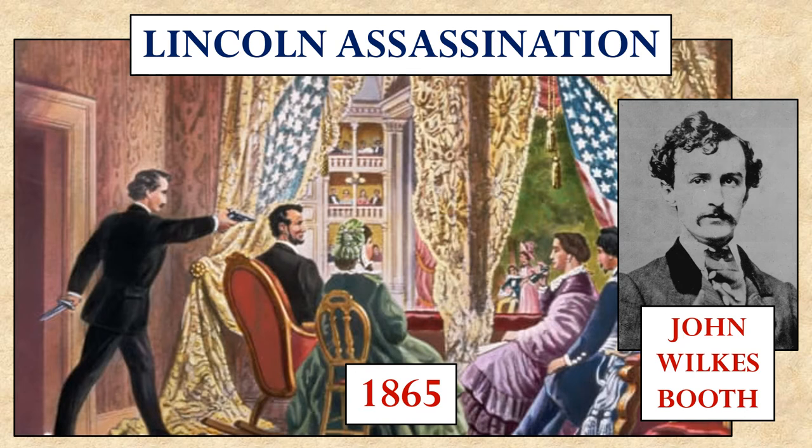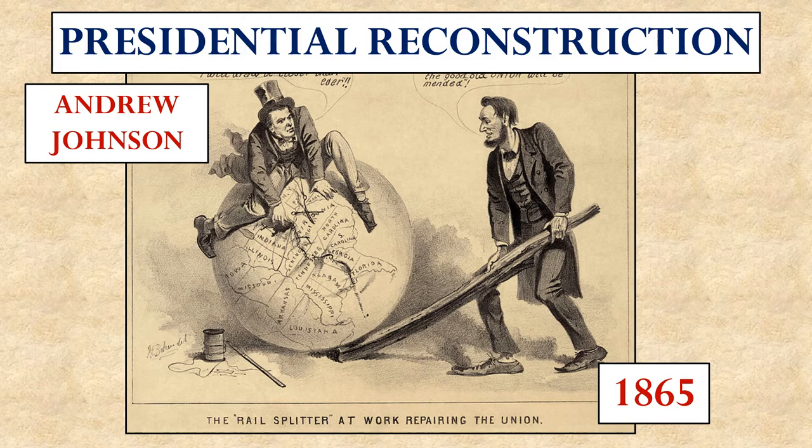The opportunity for them to use that power came because of Lincoln's assassination. A Southerner named John Wilkes Booth, who was very upset by the South losing the war, snuck into a theater and shot Abraham Lincoln in the back of the head. He died not long thereafter. With the death of Lincoln, his Reconstruction was then left to Andrew Johnson.